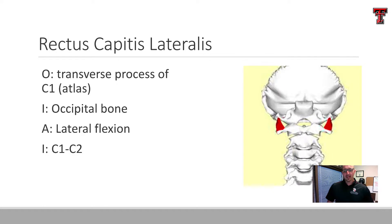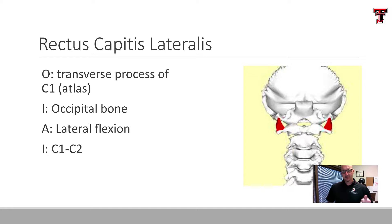The rectus capitis lateralis, as the name implies, is located a little bit more lateral on the atlas — between the atlas and the skull. It originates on the transverse process and inserts into the occipital bone. It's a lateral flexor when functioning by itself. If you fire it on both sides — left and right — they would basically counteract one another, so it would be useful for isometric action to stabilize the head.